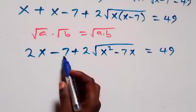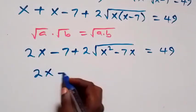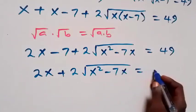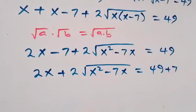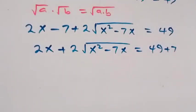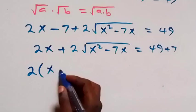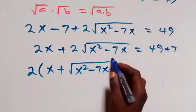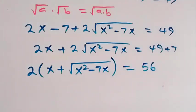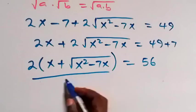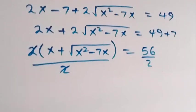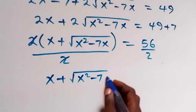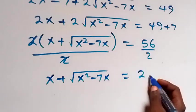Separating minus 7 to the right side gives plus 7, so we have 2x plus 2 root of x squared minus 7x equals 49 plus 7, which is 56. Factoring out 2 gives 2 times the bracket x plus root of x squared minus 7x equals 56. Dividing both sides by 2, we get x plus root of x squared minus 7x equals 28.